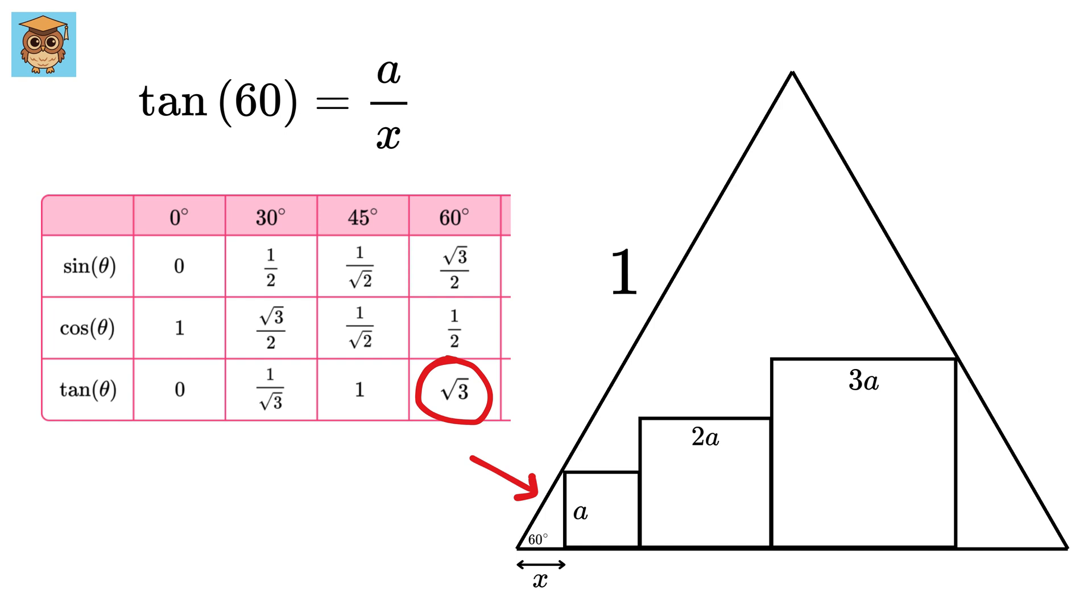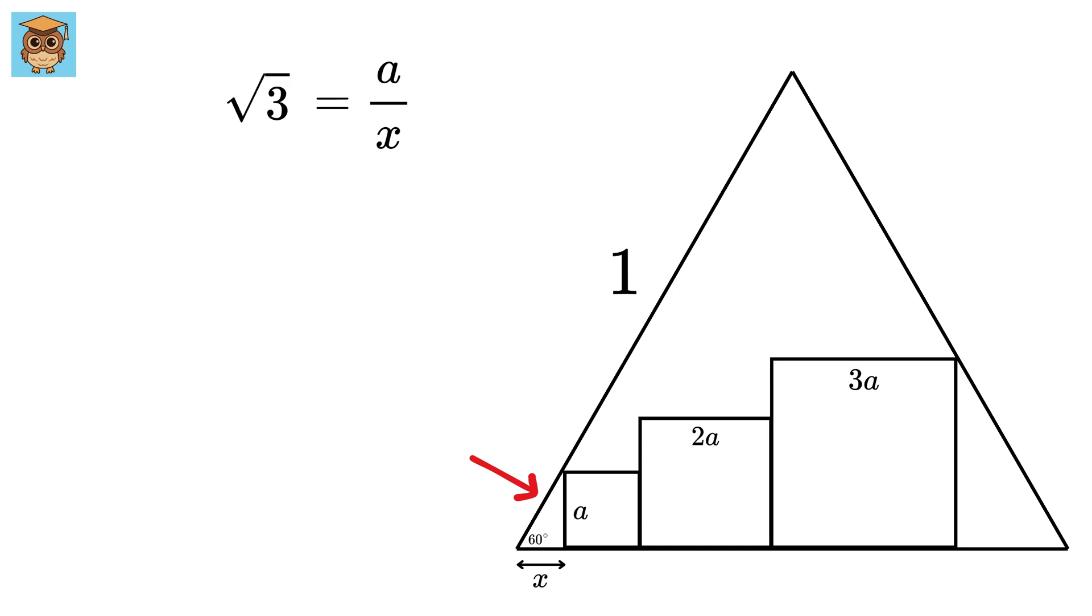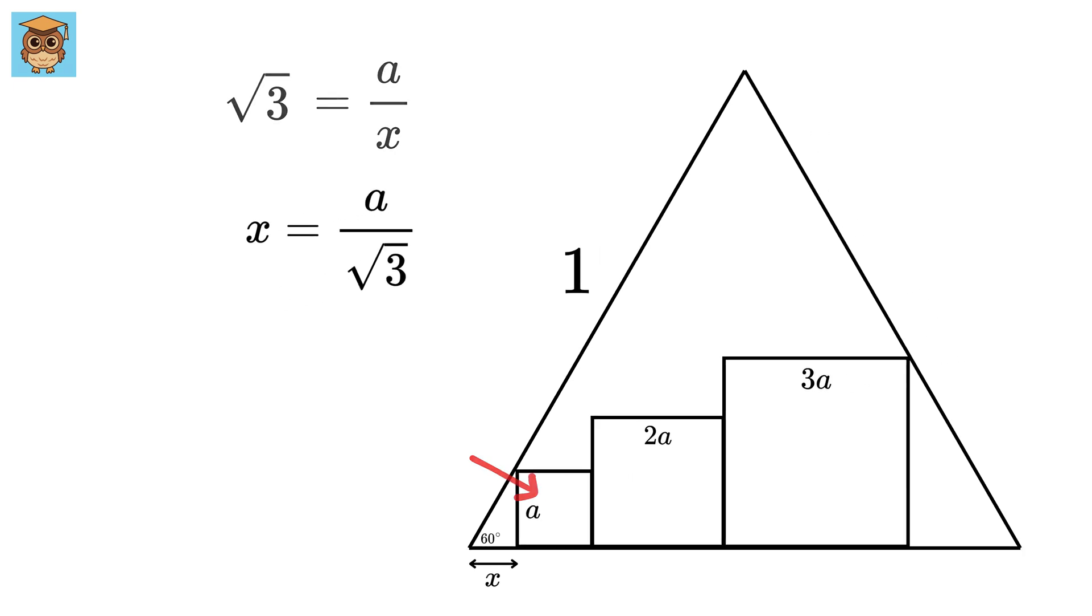Using the trigonometry table, tan of 60 is root 3. So, root 3 will be equal to a upon x, or x equals a upon root 3. Great!